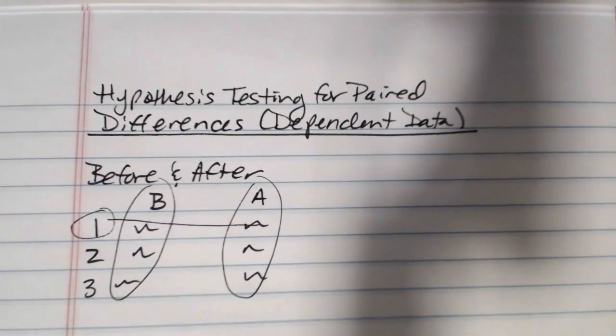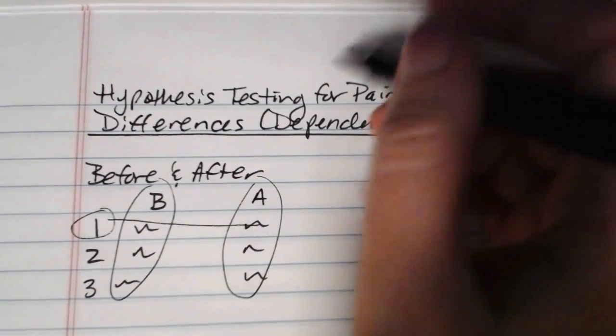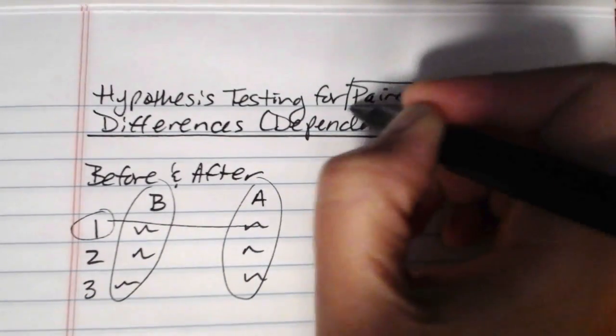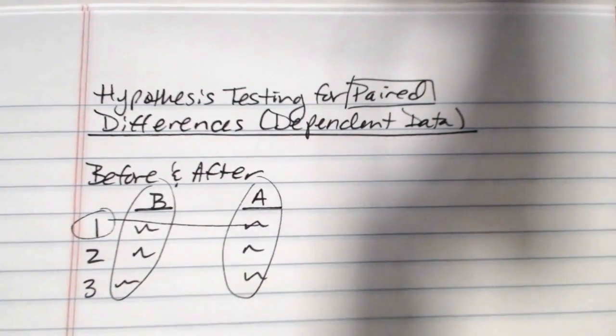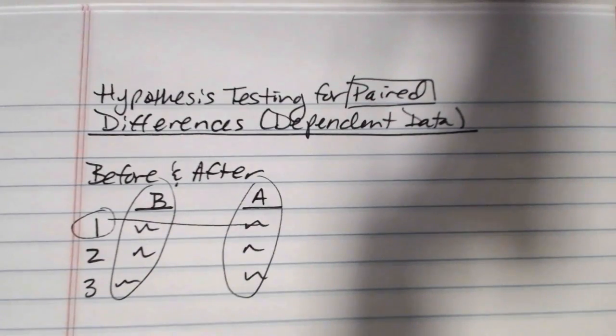The key is that the data need to be paired. So it doesn't necessarily even have to be a before and after. That's most common. But you could also have data that were paired by region.